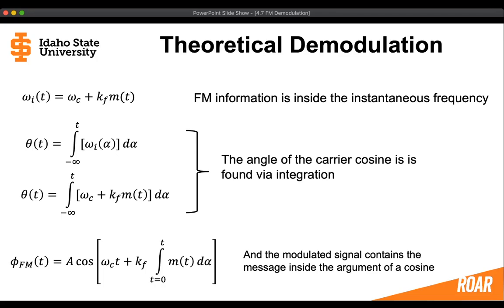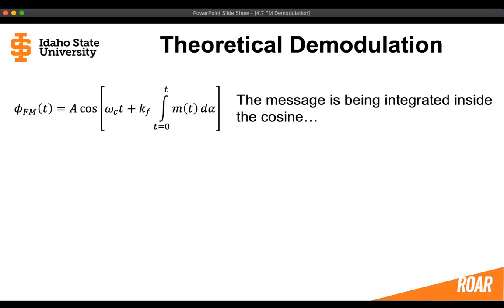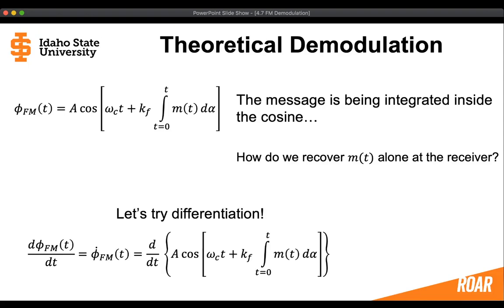So how can we recover the original message at the receiver? The message is being integrated inside of the cosine, so we need to think of a way to get that message from inside the cosine to outside the cosine — because that's what we need to do if we want to recover the message by itself at the receiver. Let's try differentiation, since differentiation is going to take something from the inside and put it in front of the cosine.